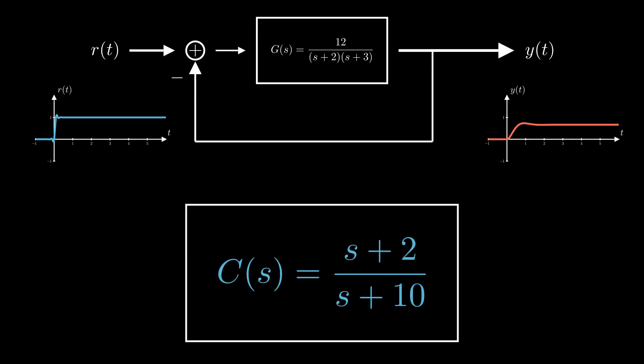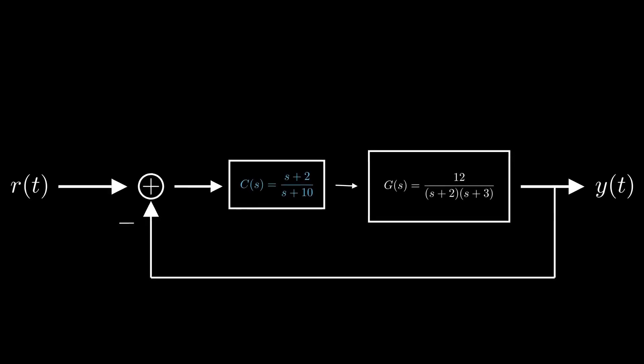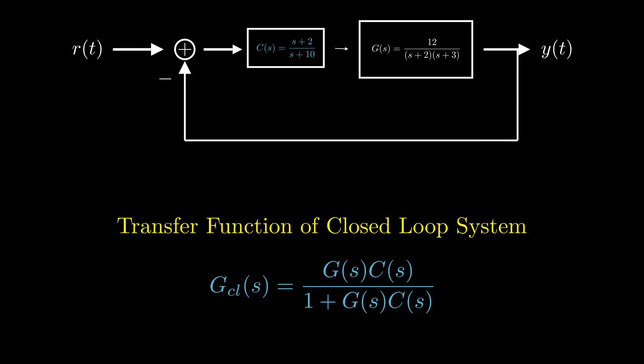Let's consider adding a controller for our system represented as s plus 2 over s plus 10. Now the closed loop transfer function for our system is G(s)C(s) over 1 plus G(s)C(s) and can be further simplified as follows.